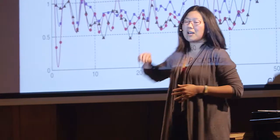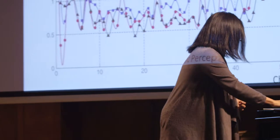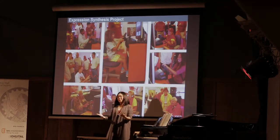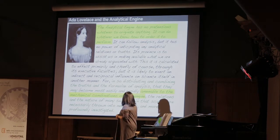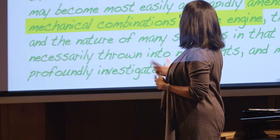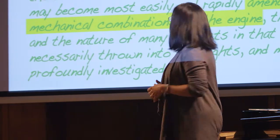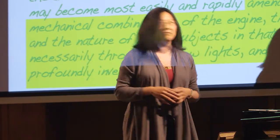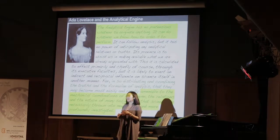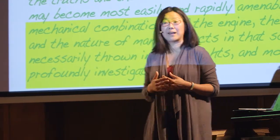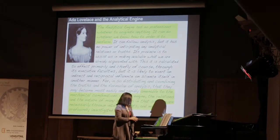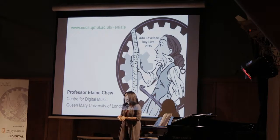Today we're also able to look at different performances — the expressive side of music performance — and compare how different artists interpret the same piece of music. These are timings taken by different pianists in a performance of Richard Strauss. We can allow people to control these parameters and generate expressive music, experiencing what it's like to perform. By making music amenable to mechanical combinations of a machine, we are forced to look more carefully at the relations of the nature of the subject and investigate it more profoundly. That's what we are doing today at the Center for Digital Music. You can find out more at my website.